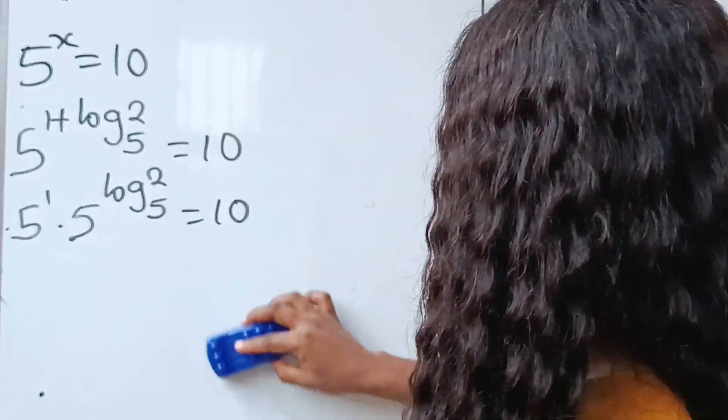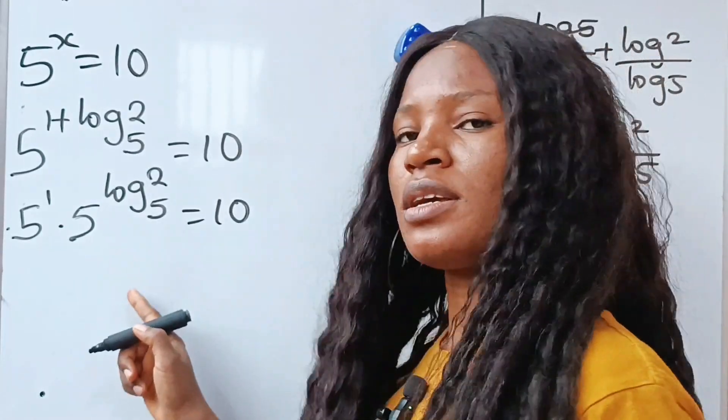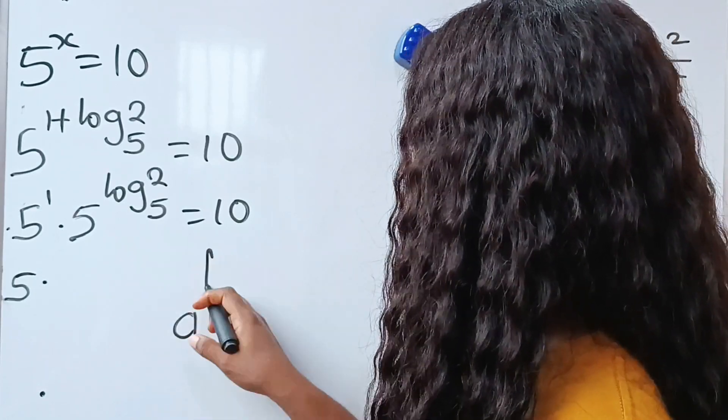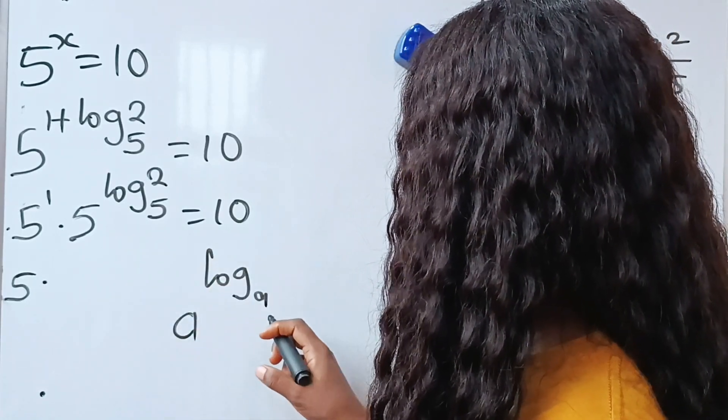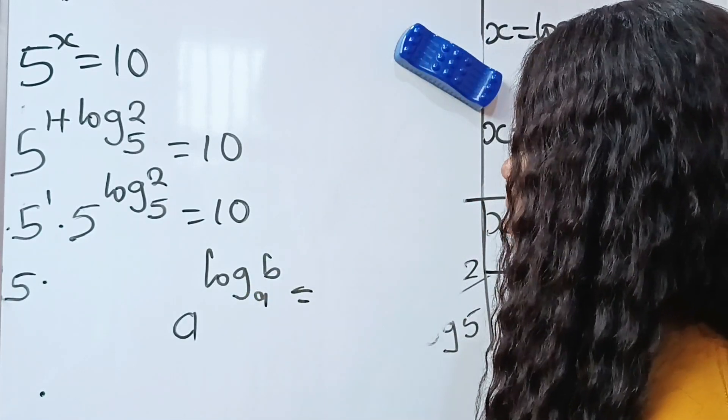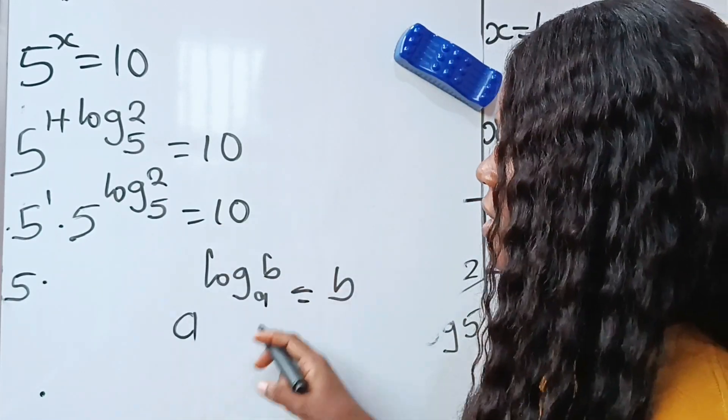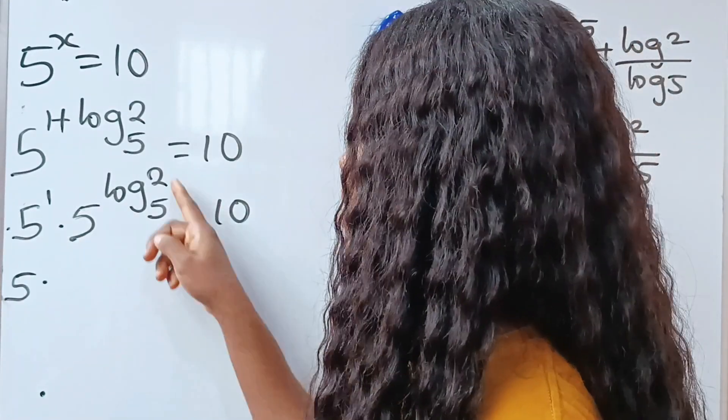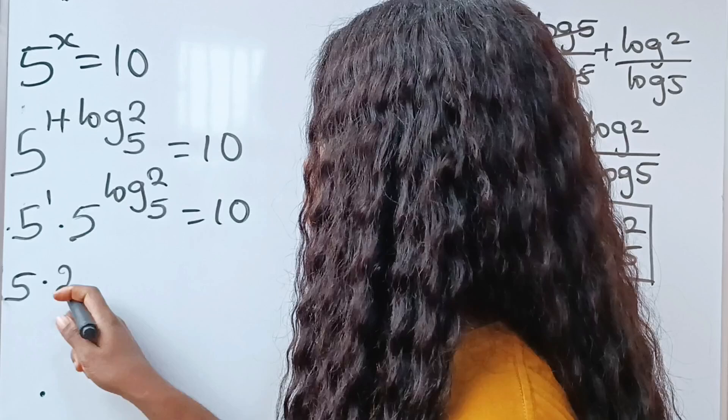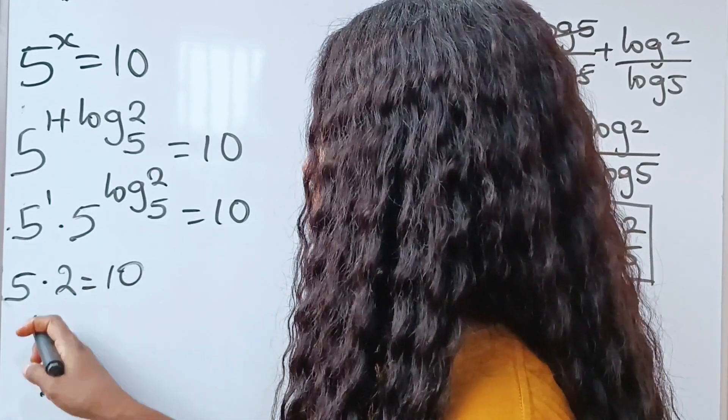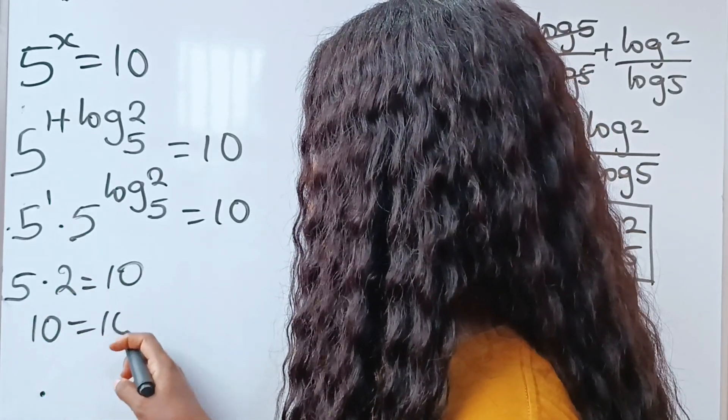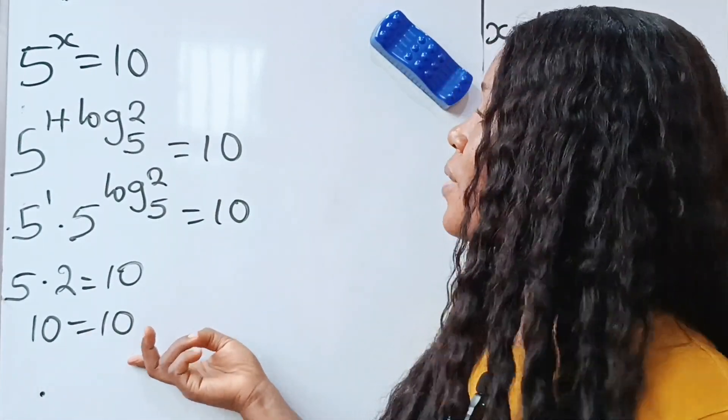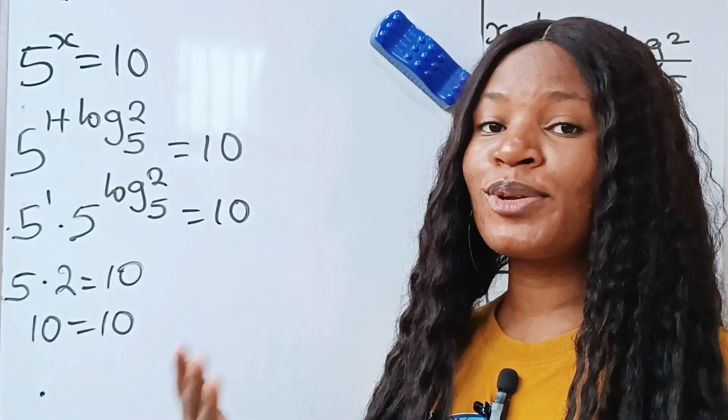So we continue. We now have something here. This is the same thing as 5 multiplied by, when you have a raised to the power of log a b, this is the same thing as b. Everything here is the same thing as b. So we are going to substitute that here. That means that everything here is 2. So we have 5 times 2 is equal to 10. Now, 5 times 2 is 10 and 10 is equal to 10. Since the left-hand side is equal to the right-hand side, that means that the solution is correct.